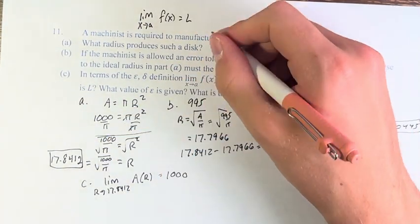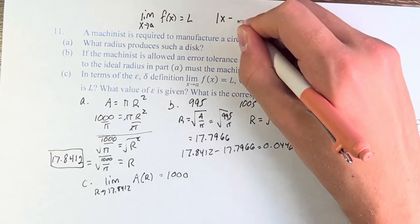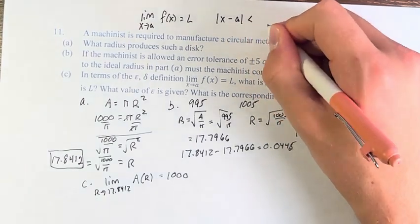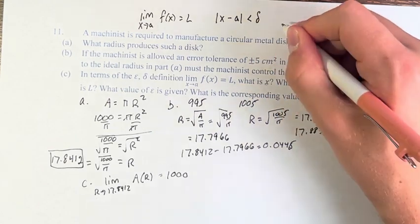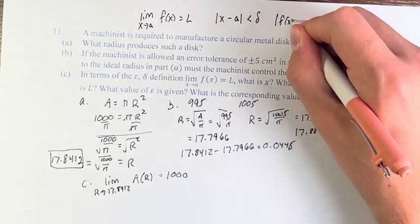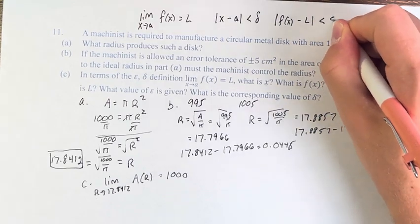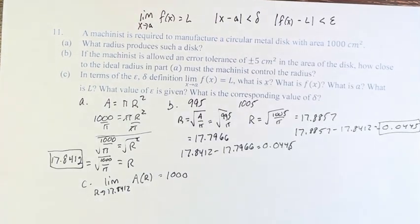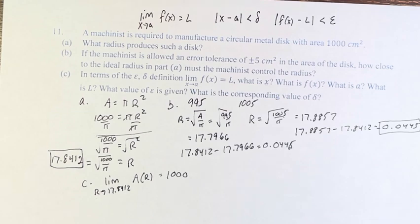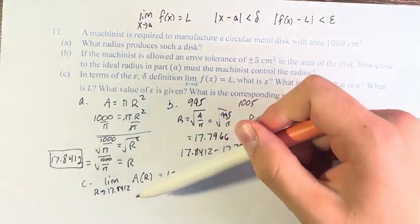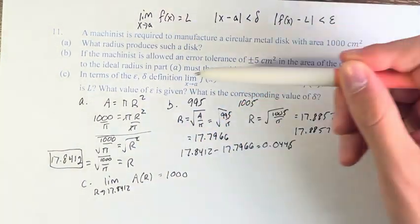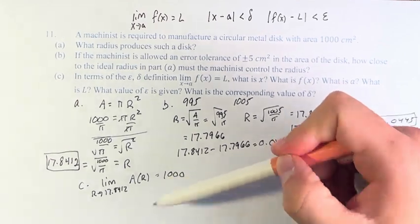And, that means that we need to have the absolute value of x minus A is less than delta. And, the absolute value of f of x minus L is less than epsilon. So, here you can see we've already done this part. And, what is A? A is 17.8412. What is L? L is the value of the limit itself, 1,000.